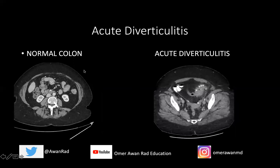Moving on to acute diverticulitis. I want to highlight the normal colon. The ascending colon in the right hemi-abdomen and the descending colon are retroperitoneal structures. Notice you can see gas within the lumen, outlined by stool. The fat around the descending colon is nice and pristine — no haziness to the fat, no wall thickening. The colon itself looks completely normal on this image. However, if we come here, notice that we have these outpouchings outlined by contrast. These are the diverticula — there's colonic diverticulosis here, and even more than that, there's wall thickening along the descending or sigmoid colon, and the fat around it is very hazy. We call this fat stranding — a marker for inflammation.